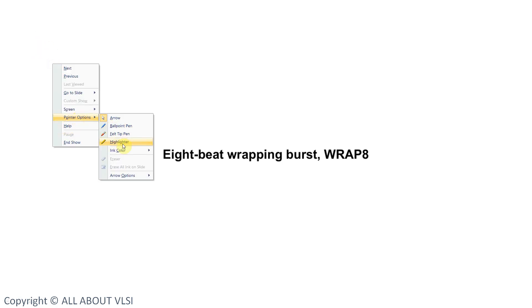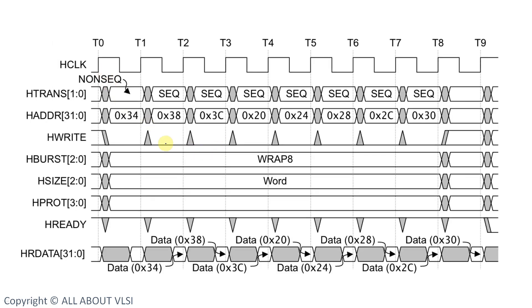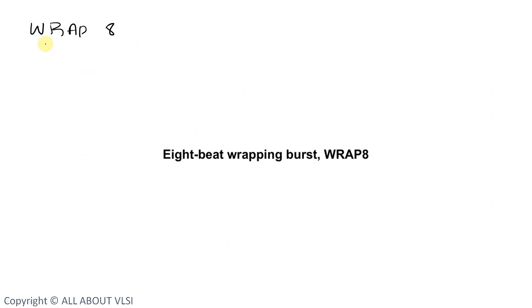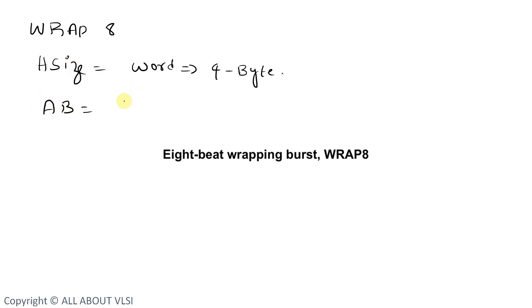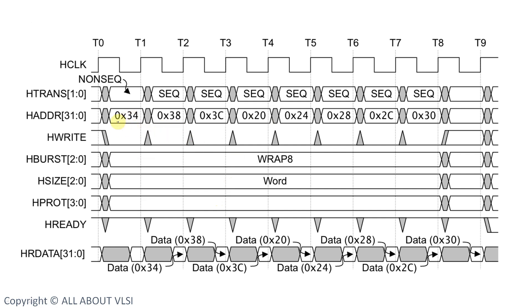In the case of wrapping bursts, the address wraps around to the initial address — we have already seen this. In this example we have a WRAP8 burst and the size is word. Word means 4 bytes, so the beat size is 4 bytes. The address boundary is 8 × 4 = 32, so the address boundary is 32 bytes. The starting address is 0x34, going to 0x38, 0x3C, and then wrapping back to 0x20.